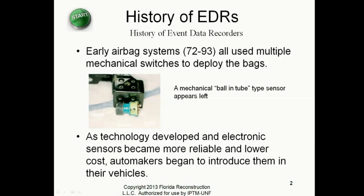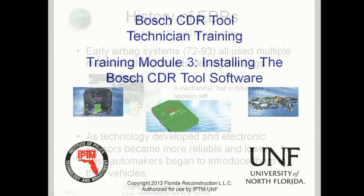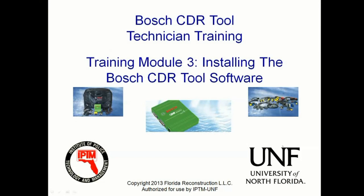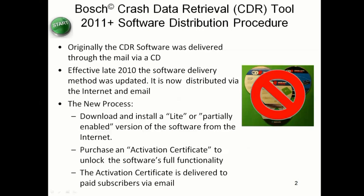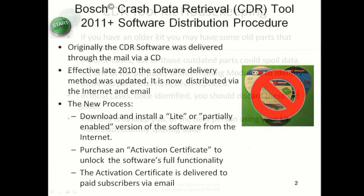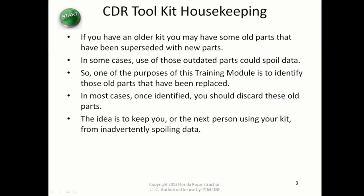Early airbag systems all used multiple mechanical switches to deploy the airbag. Originally, the CDR software was delivered through the mail via a CD, but effective late 2010, the software delivery method was updated. It is now distributed via the internet and email, and some older parts have been superseded with new parts.